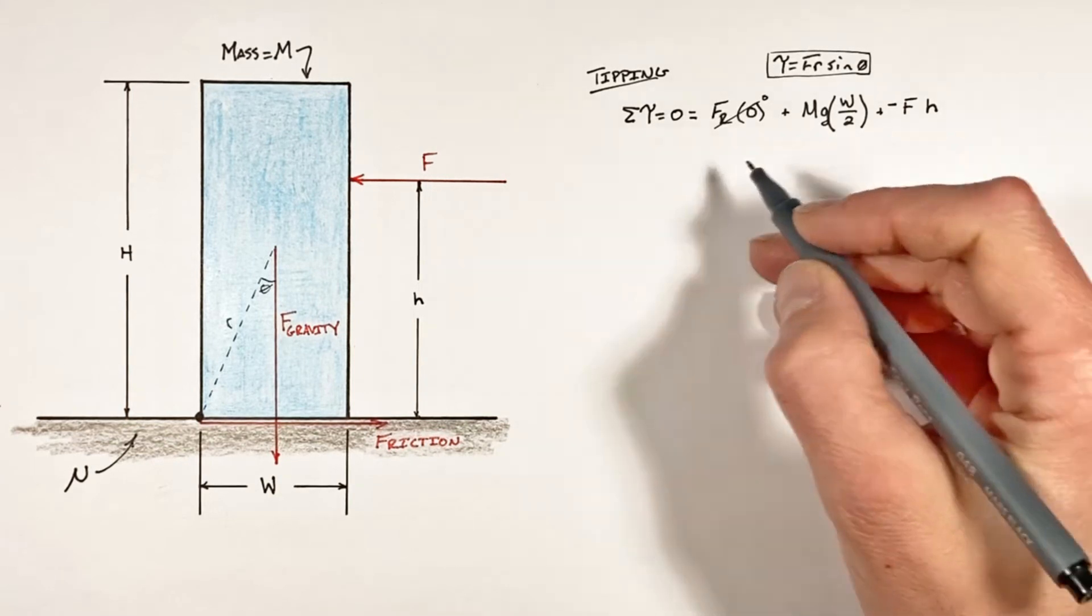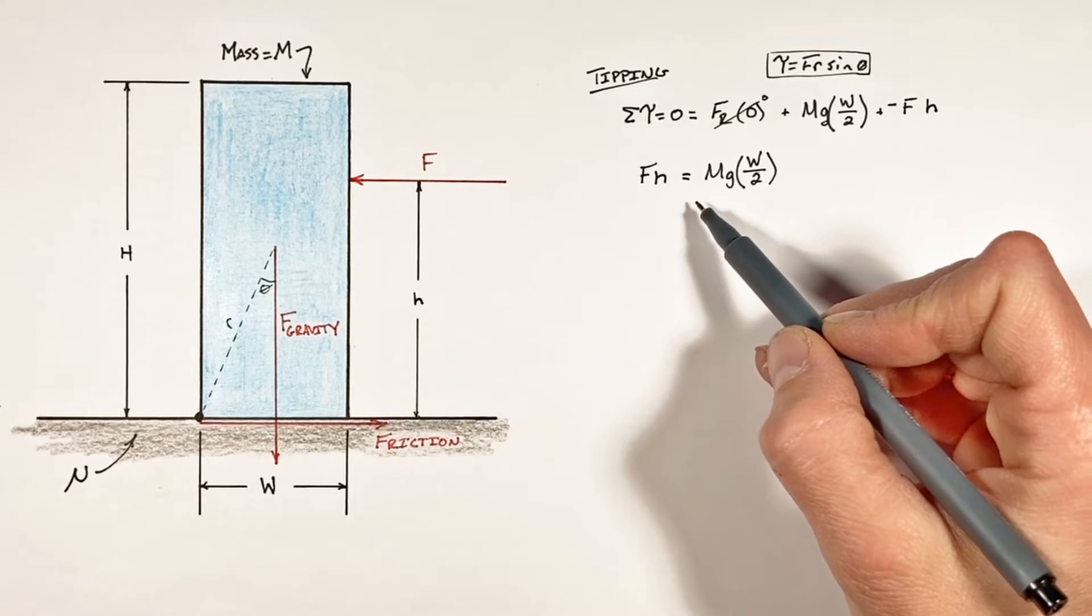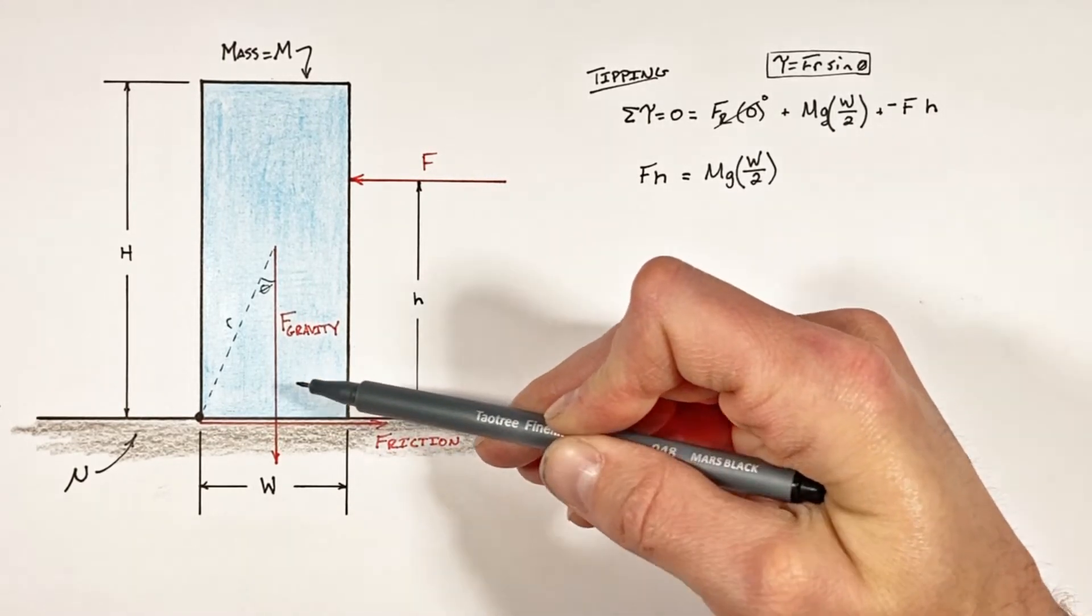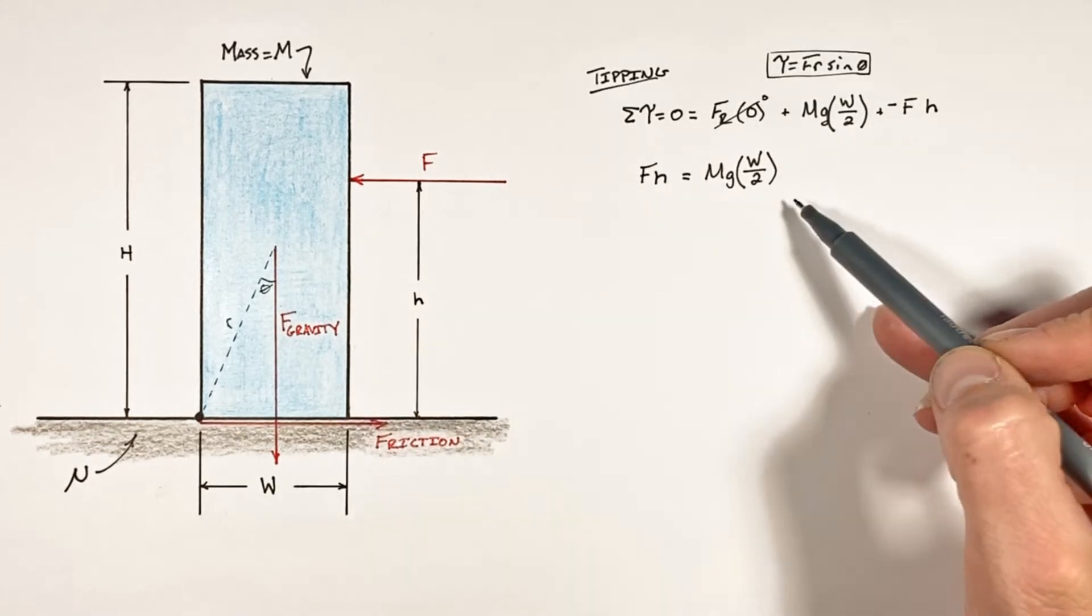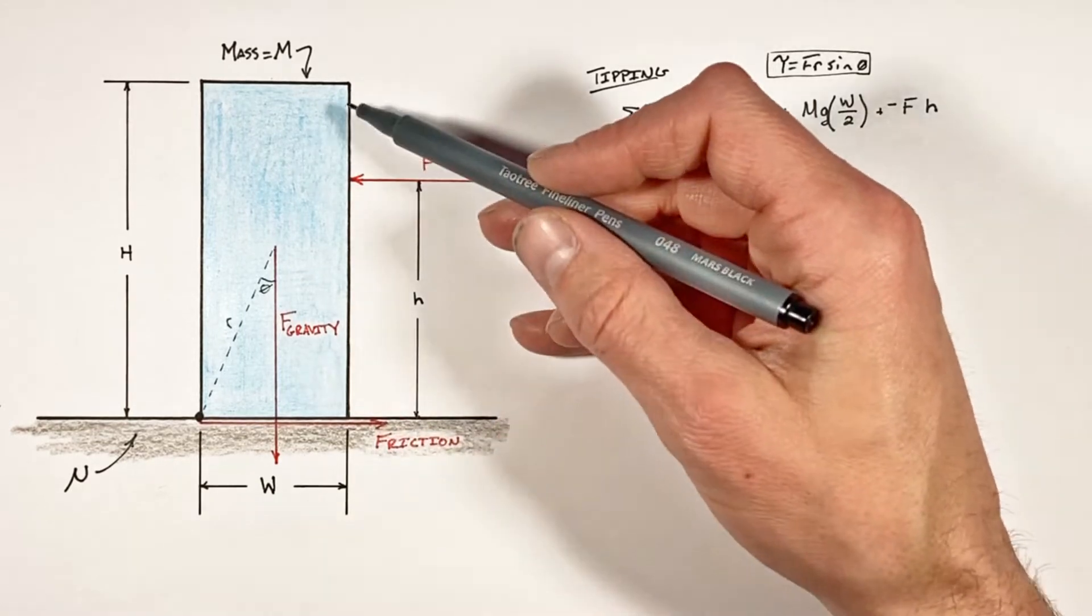So rearranging this equation a little bit, we get this expression which on its own isn't all that useful. So let's take a look at what's happening when the block is sliding, and then we'll be able to actually put this to work in solving for this critical height which is going to separate sliding from tipping.